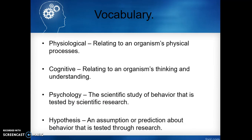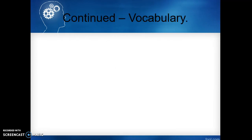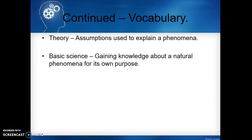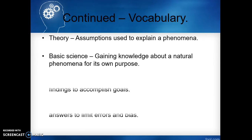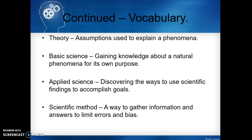Psychology is the scientific study of behavior that is tested by scientific research. A hypothesis is an assumption or prediction about behavior that is tested through research. A theory is assumptions used to explain a phenomenon. Basic science is gaining knowledge about a natural phenomenon for its own purpose. Applied science is discovering the ways to use scientific findings to accomplish goals. The scientific method is a way to gather information and answers to limit errors and bias.